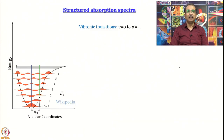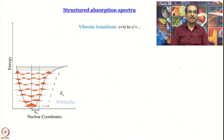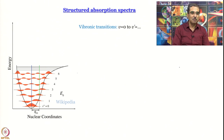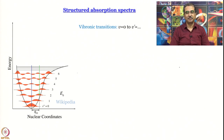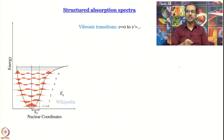That depends on the relative values of the bond lengths in the ground and excited states. I have taken this figure from Wikipedia and done a little surgery — I cut the top part and moved it around. Please neglect the blue vertical arrow wherever it appears; I have drawn my own arrows where required. Structured absorption spectra like this arise from vibronic transitions: v=0 to v'=0, 1, 2, 3, and so on.